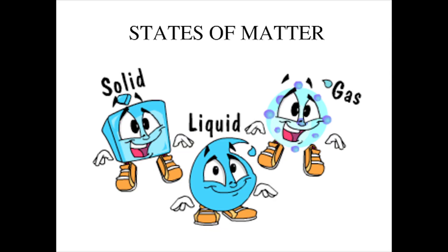There are three states of matter, but although scientists from NASA say that there are six or even seven states of matter, we will focus on the three major states that people on Earth mostly come across. Those three states are liquid, solid, and gas.